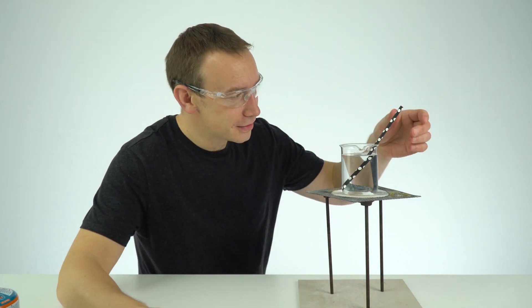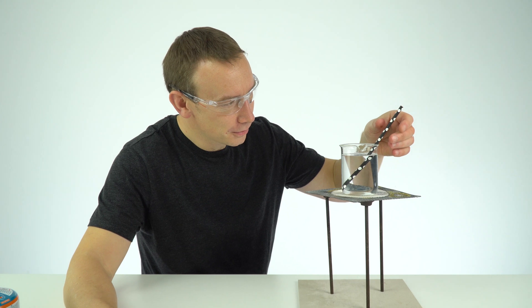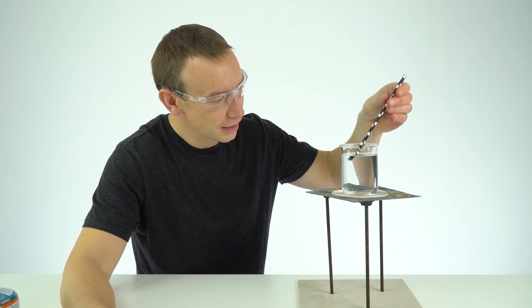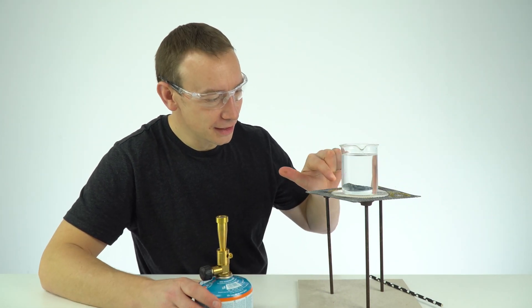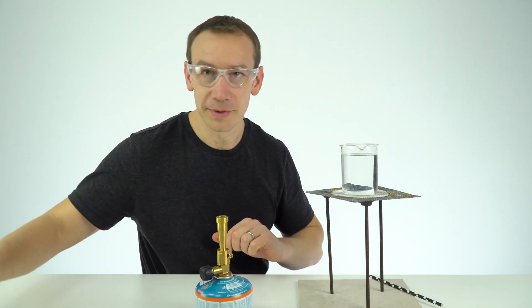I've just put literally one small crystal at the bottom, hardly anything at all. What I'm now going to do is light the Bunsen burner and just very gently heat on this side of the beaker.